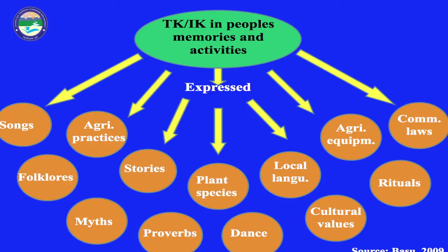The ethnobotany knowledge is transferred from one generation to the next in a chain. This knowledge can be expressed and transferred through songs, agricultural practices, folk lore, stories, traditional myths, plant species use, proverbs, dances, local languages, cultural practices, cultural values, agricultural equipment, rituals, and community law.